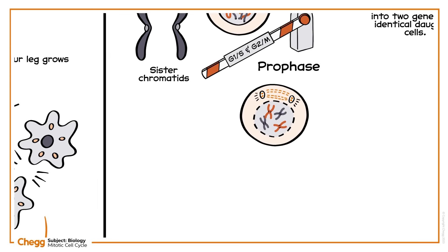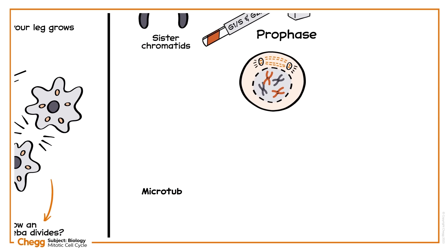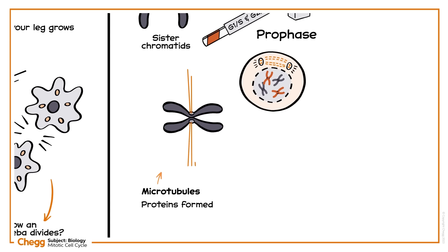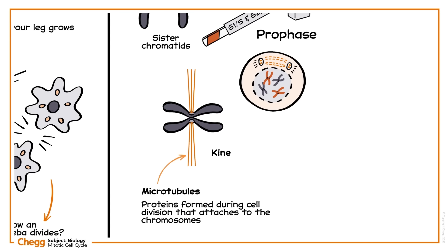You might be confused about microtubules. These are proteins formed during cell division that attach to the chromosomes at the kinetochore protein present in the centromere of the chromosome. Also, note that the centromere is the structure where the sister chromatids of the chromosomes attach.